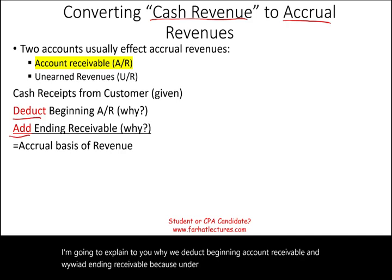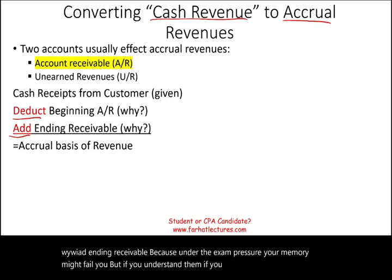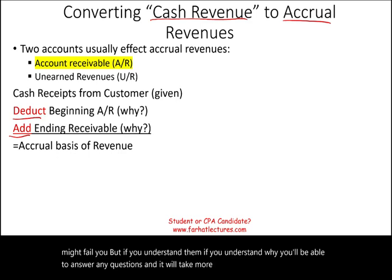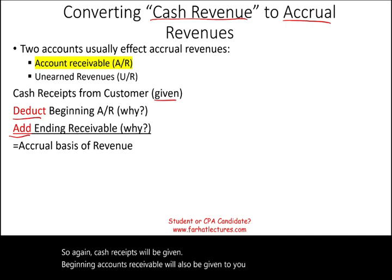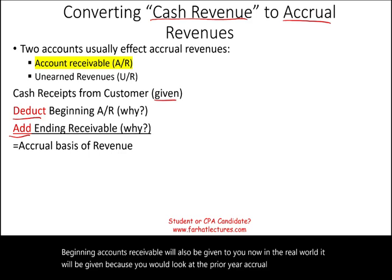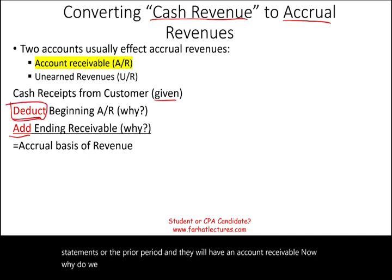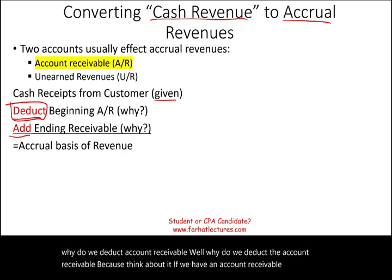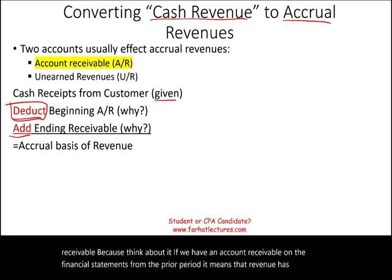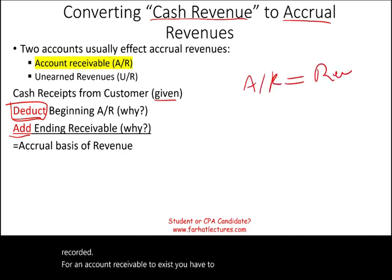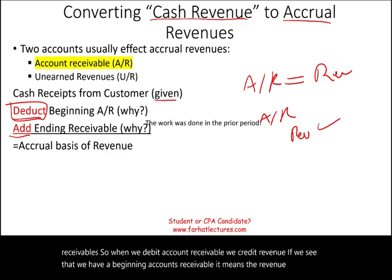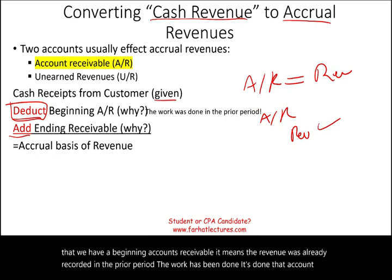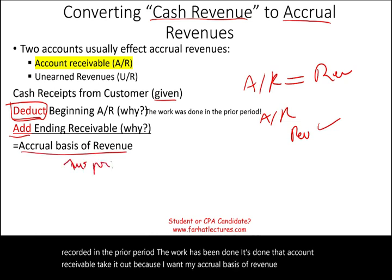I'm going to explain why we deduct beginning accounts receivable and why we add ending receivable, because under exam pressure your memory might fail you. If you understand why, you'll be able to answer any question. Beginning accounts receivable will be given — in the real world you look at prior year accrual financial statements. Why do we deduct accounts receivable? If we have accounts receivable on the financial statements from the prior period, it means that revenue has already been recorded. For an accounts receivable to exist, you have to have a revenue against the receivable — debit AR, credit revenue. So the revenue was already recorded in the prior period; take it out because I want accrual basis revenue for this period.